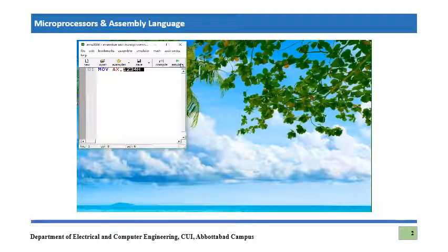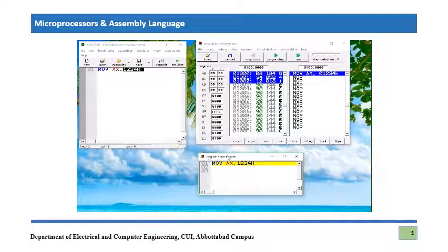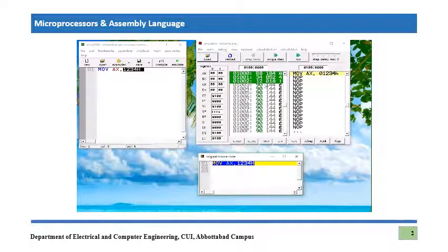Now we see two different windows appear. This window is known as the original source code — whatever program we write in the workspace will appear here. We can see multiple lines if our program consists of multiple lines, but since our program was just a single line, there is just one line. Once we click on this single line, the other window highlights the equivalent machine code of this assembly instruction. The equivalent machine code is B8 34 12 — that's three bytes.